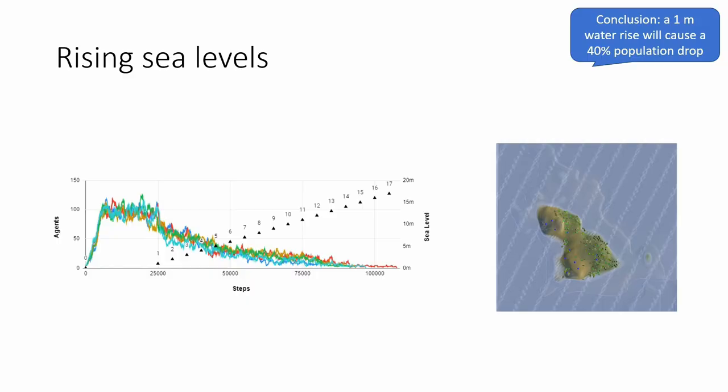Another study: what happens if the sea level rises by one meter, two meters, three meters? After only one and two meters of sea level rise, the hare population is roughly down to half. Here are the original contours of the island, and this is what it will look like after a couple of meters of sea level rise. So we can actually look a little bit into the future and see what happens to the ecosystem in different scenarios.